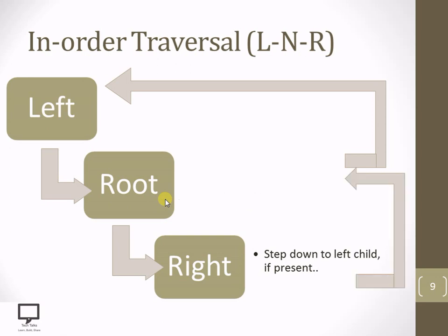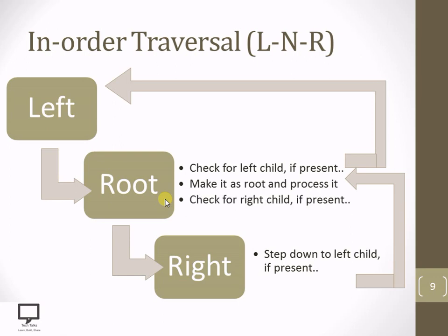If it is present, we need to step back, make it the root, and again check whether it is having a left child or not. If it is present, we need to move to the left child. Otherwise, process it and again check for a right child if it is present.